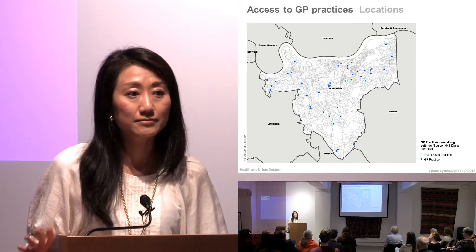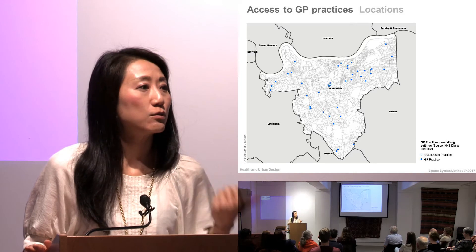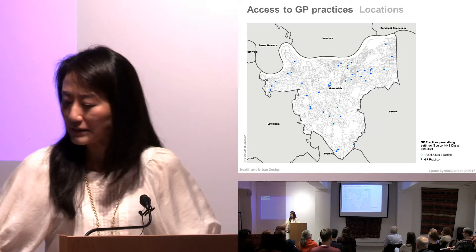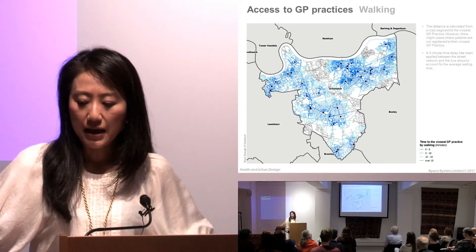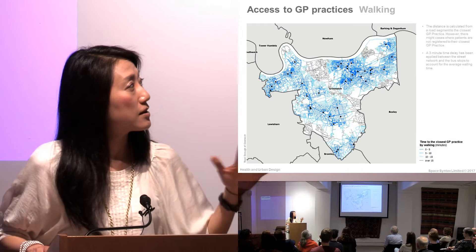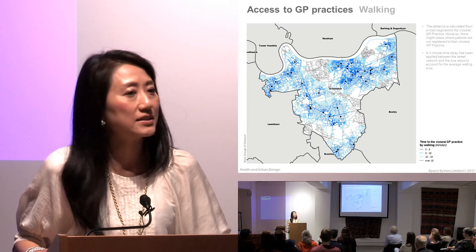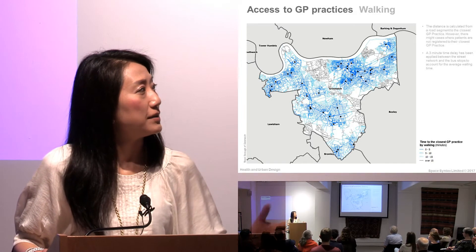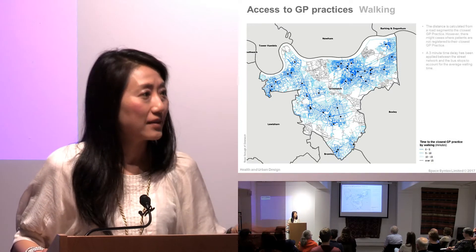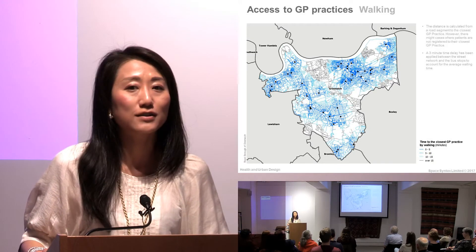Access to GP surgeries is fundamental in two ways: one is in terms of active travel, whether you can walk to GP surgeries, but also whether you can access them at all. If you map the GP locations and calculate the walking distance in the same way, the darker blue means within five minutes walking distance, and grey means there is no GP within 15 minutes walking distance. You can see the spatial disparity — which areas are disadvantaged in terms of access to GPs.